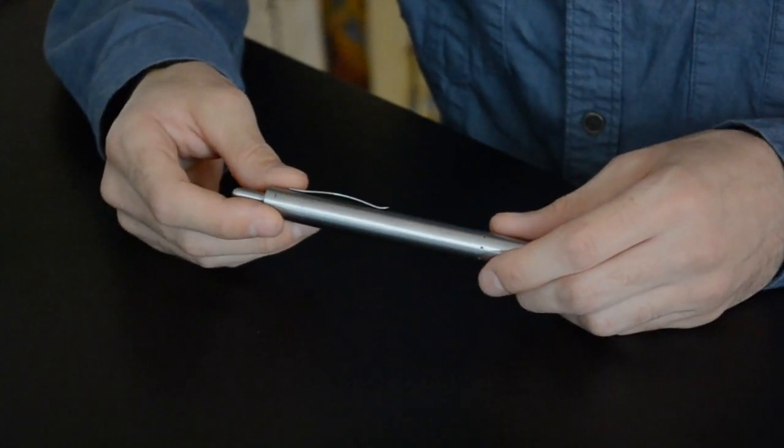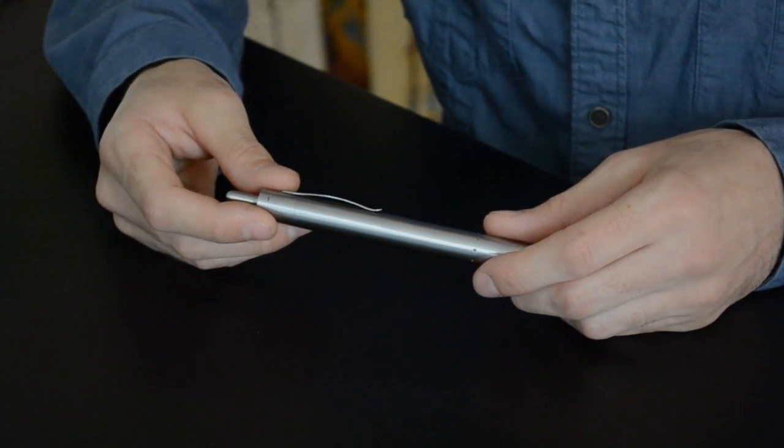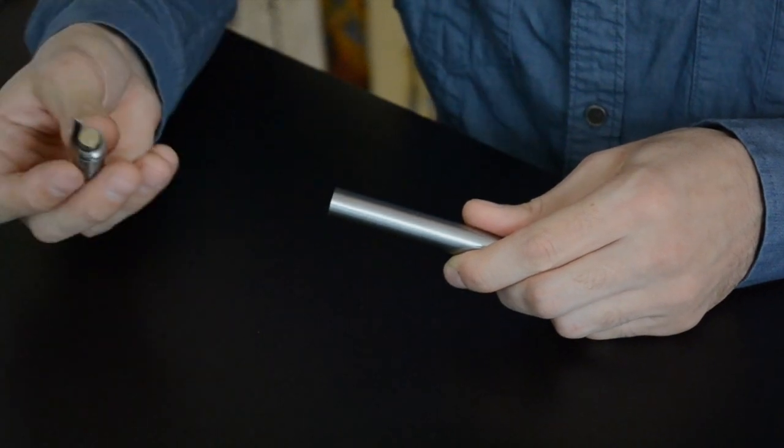The Grasshopper has a user-replaceable battery. That means you can change it out at any time. To remove the battery, you just unscrew the back end, and the battery slides right out.